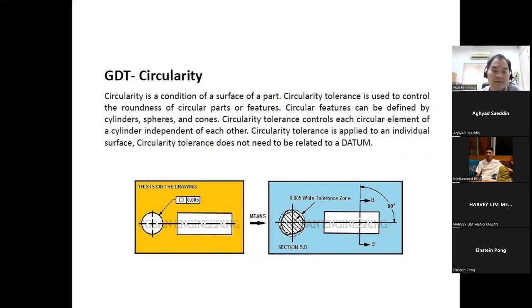Circularity is a condition of a surface of a part. Circularity tolerance is used to control the roundness of circular parts or features. Circularity features can be defined by cylinders, spheres, and cones. Circularity tolerance controls each circular element of a cylinder independent of each other. Circularity tolerance is applied to an individual surface. Circularity tolerance does not need to be related to a datum.